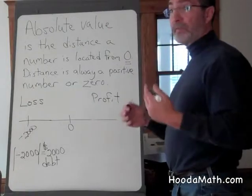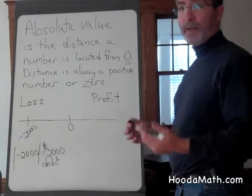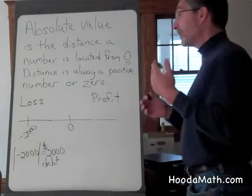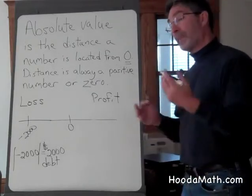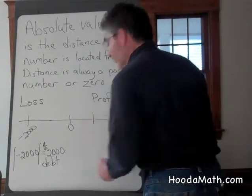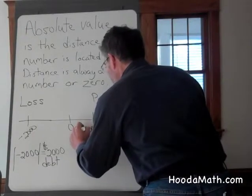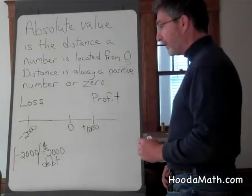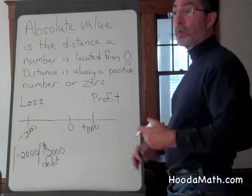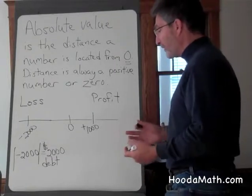Now, if the next month my company did better and I had a profit, that would be a positive number. And if my profit was, say, $1,000 located here, and it's a positive number, I still might want to know what is the distance from zero. What is my absolute value?